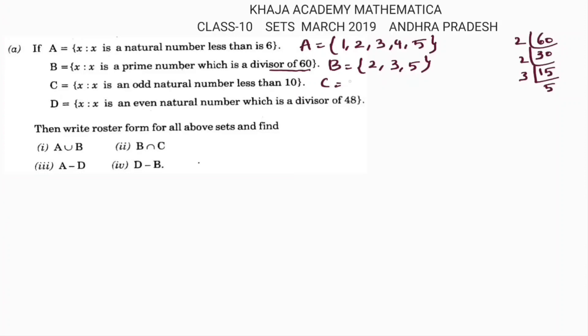Set C is defined as x which is an odd natural number less than 10. So the odd numbers less than 10 are 1, 3, 5, 7, 9. Set D is defined as x which is an even natural number and a divisor of 48.